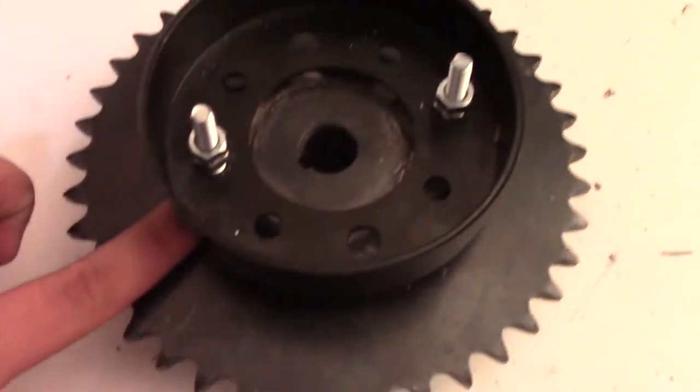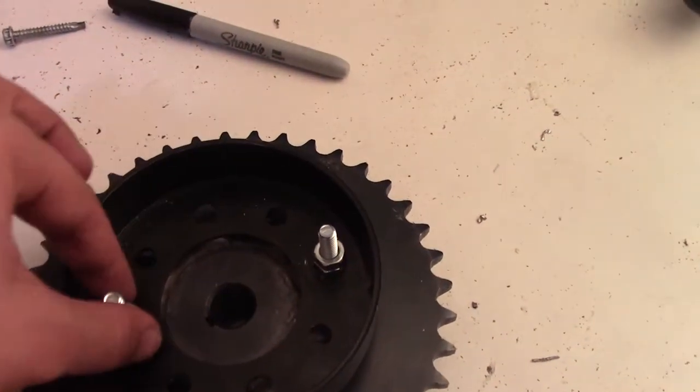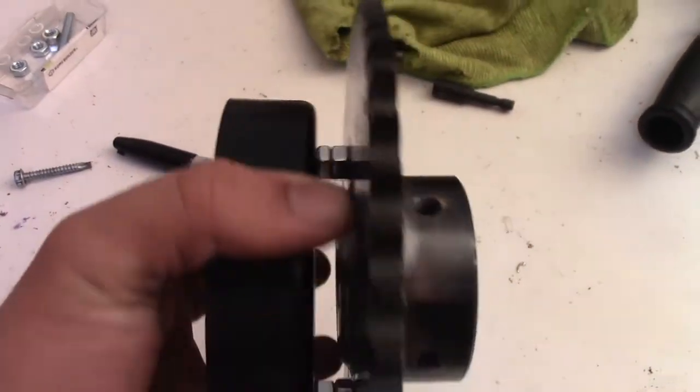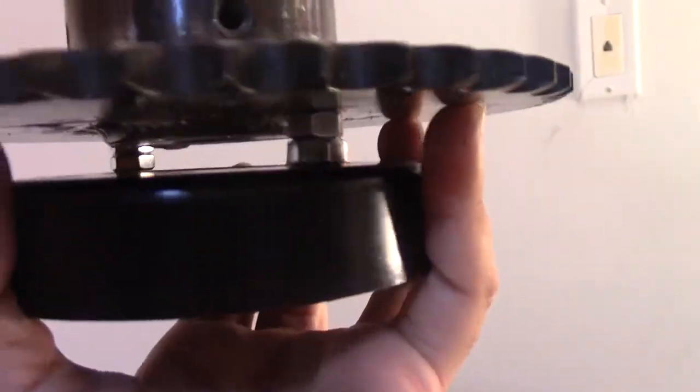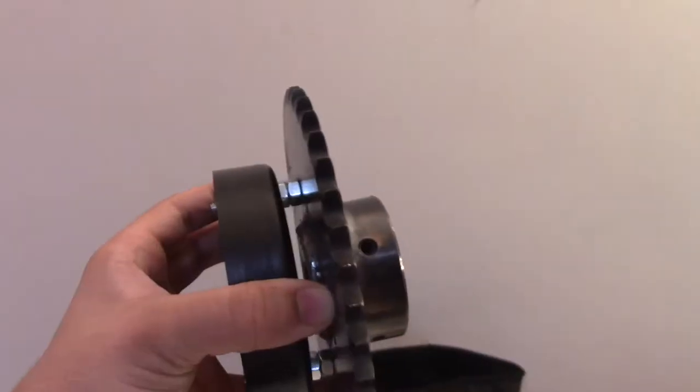This is really sturdy, it doesn't wiggle or anything. The two nuts as you can see provide good spacing from the sprocket on the brake. This is what it looks like on this side. Now I'm going to try to mount it on the go-kart.